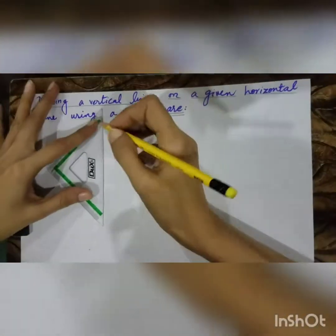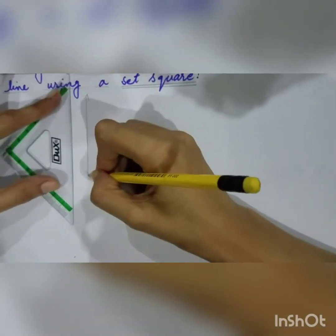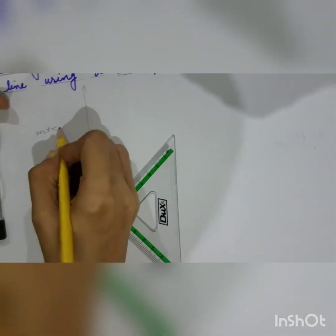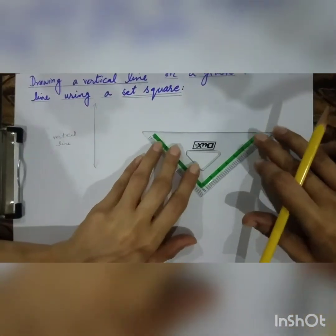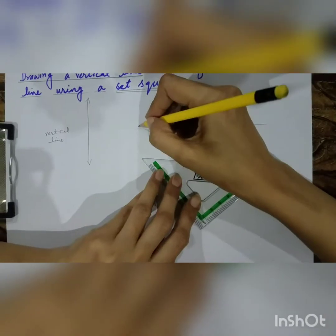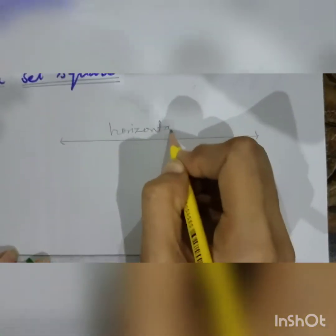A vertical line is the one which runs up and down the surface — this is called a vertical line. A horizontal line is the line which runs from left to right. These are the two key definitions we need before we begin.